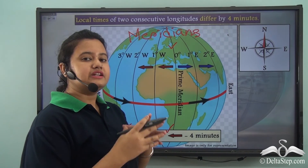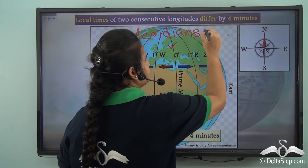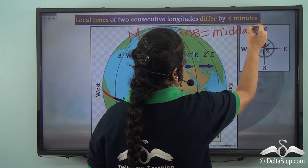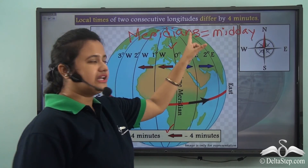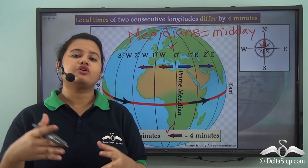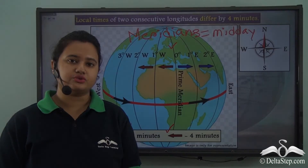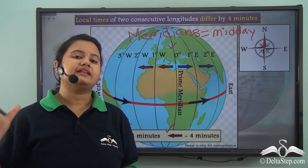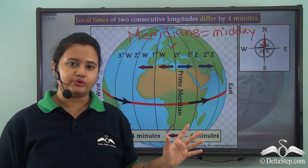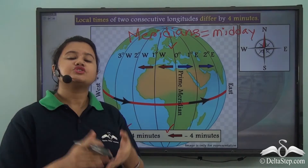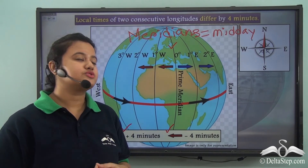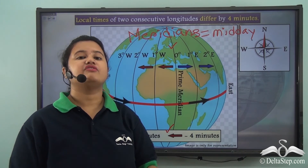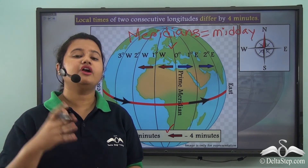The literal meaning of meridian is midday. You can relate this with the position of the sun corresponding to each line of longitude — if the sun is overhead a particular longitude, then that longitude will have 12 noon, or midday. This is the reason why longitudes are also known as meridians, as they experience midday when the sun is overhead over that particular longitude.